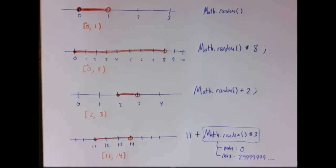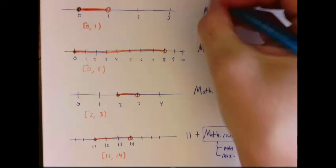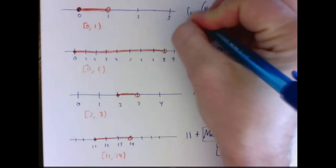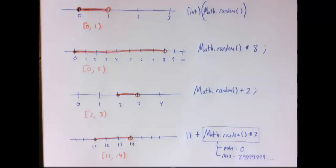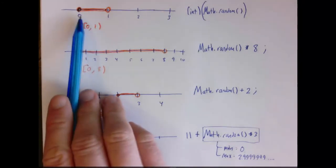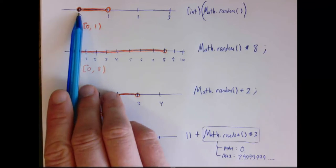These have all been doubles. Let's end by talking about what if you want to generate a random integer. So if I cast to int, what that's doing is it's truncating any decimal portion of the random number, and truncating just means chopping it off.